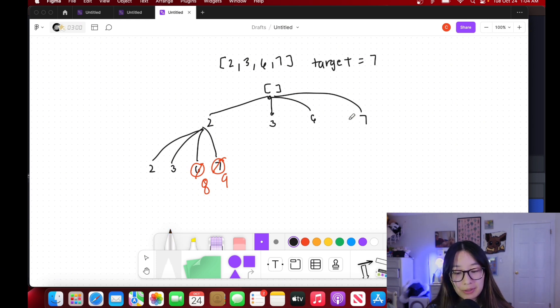When we look at our first level we notice immediately that 7 will get us our target, so we want to add this into our list. All of these other ones because they are less than 7, we want to continue down.